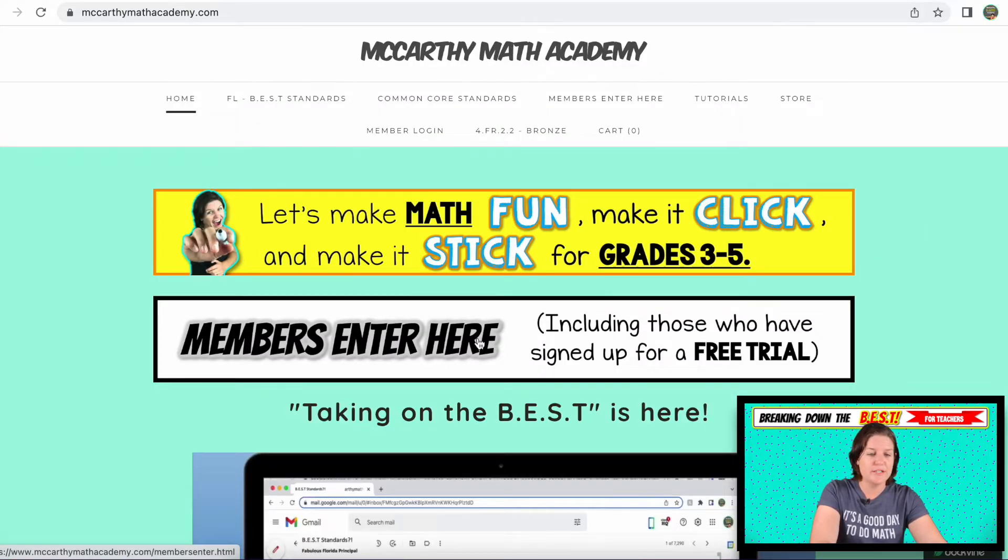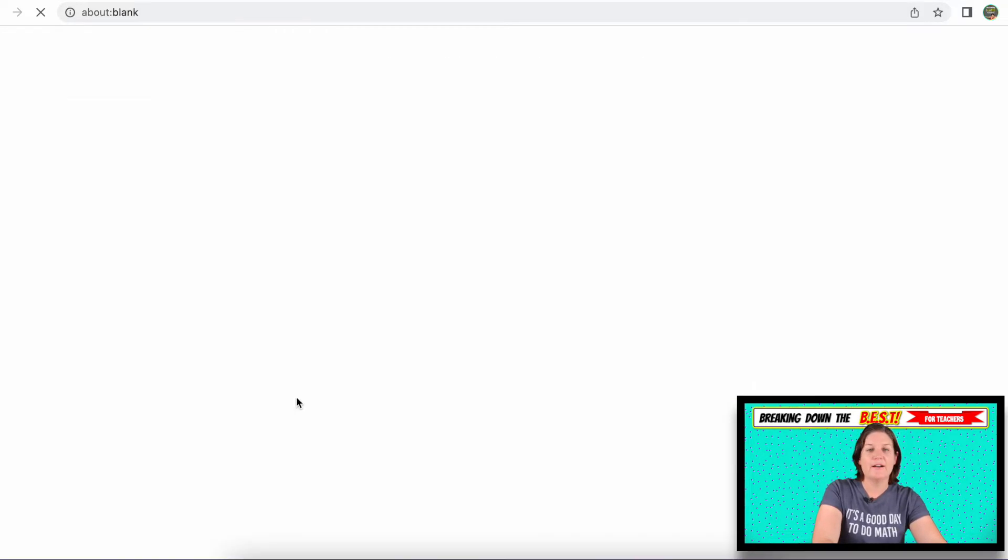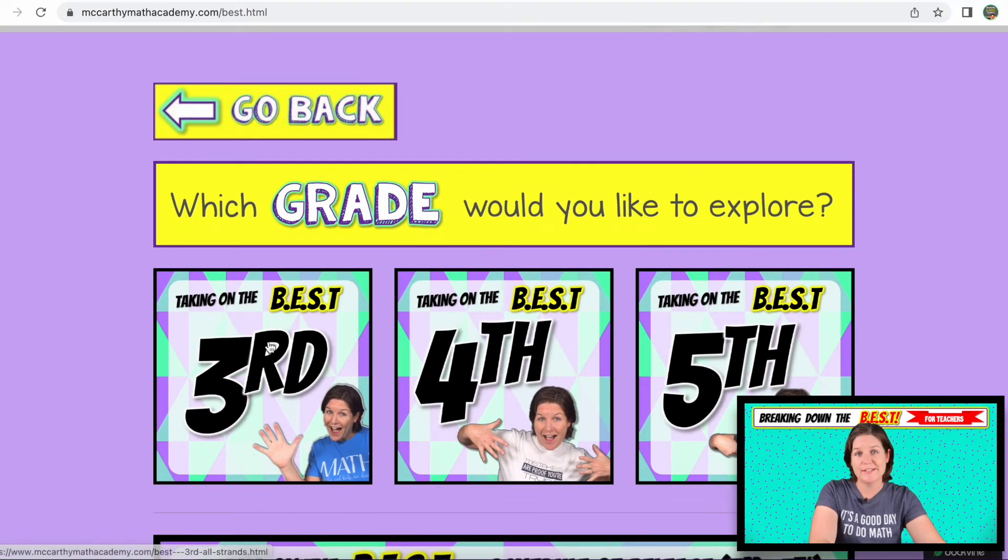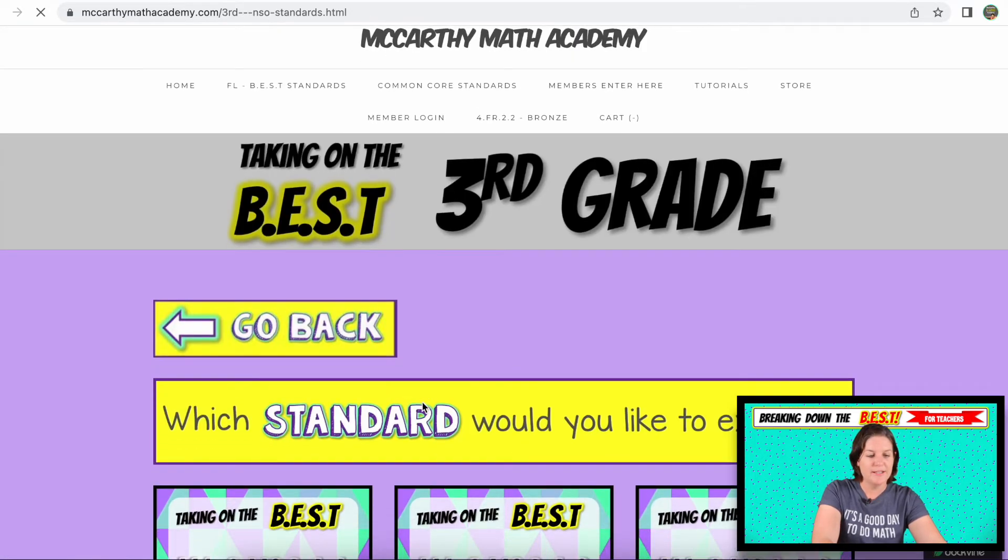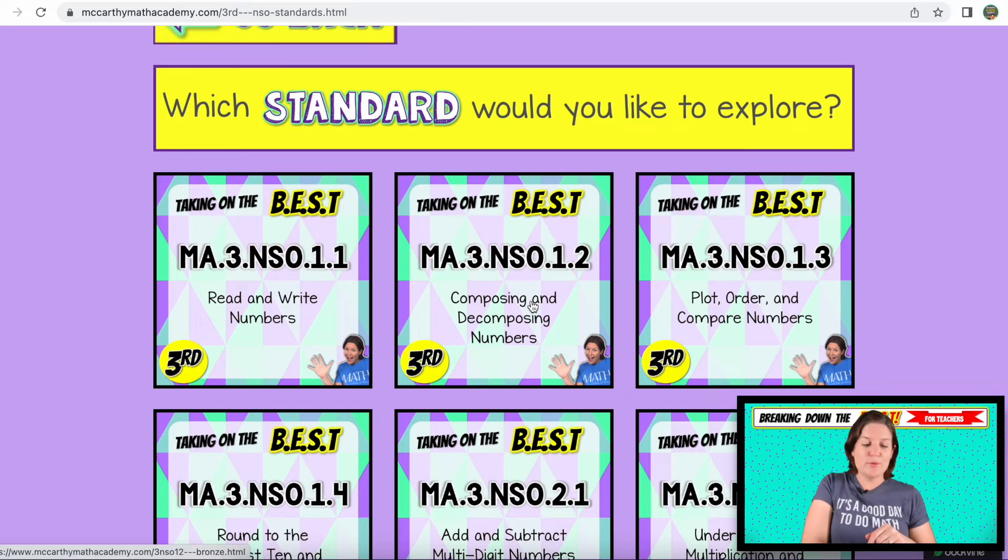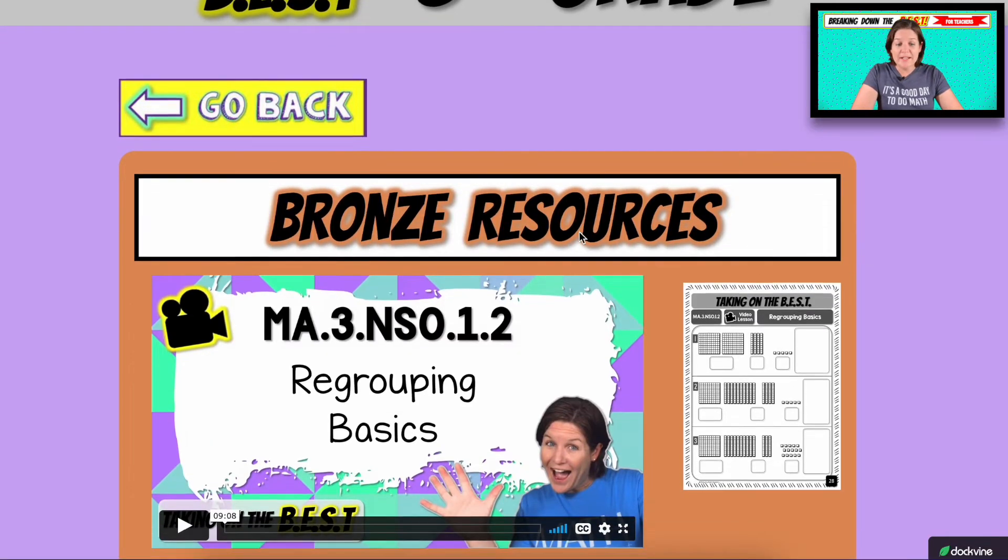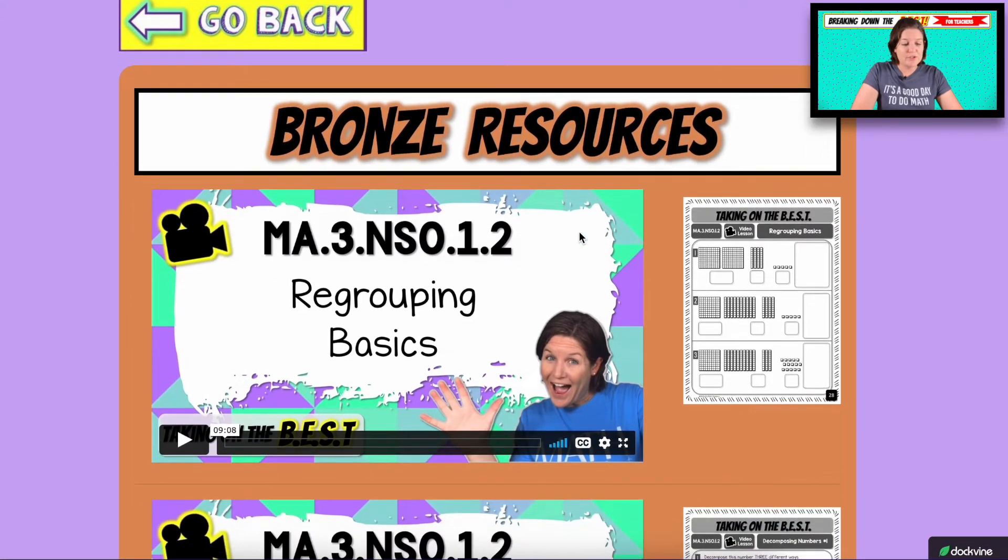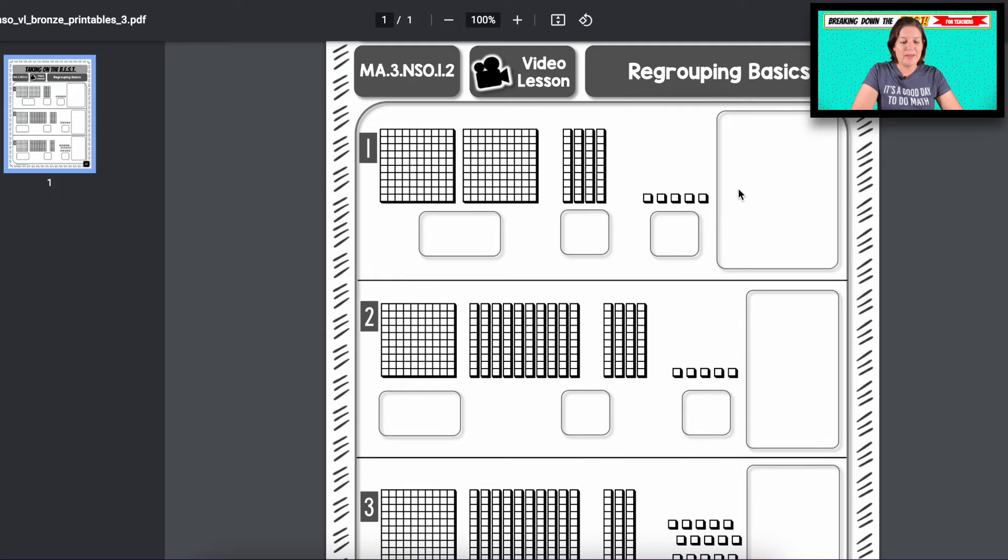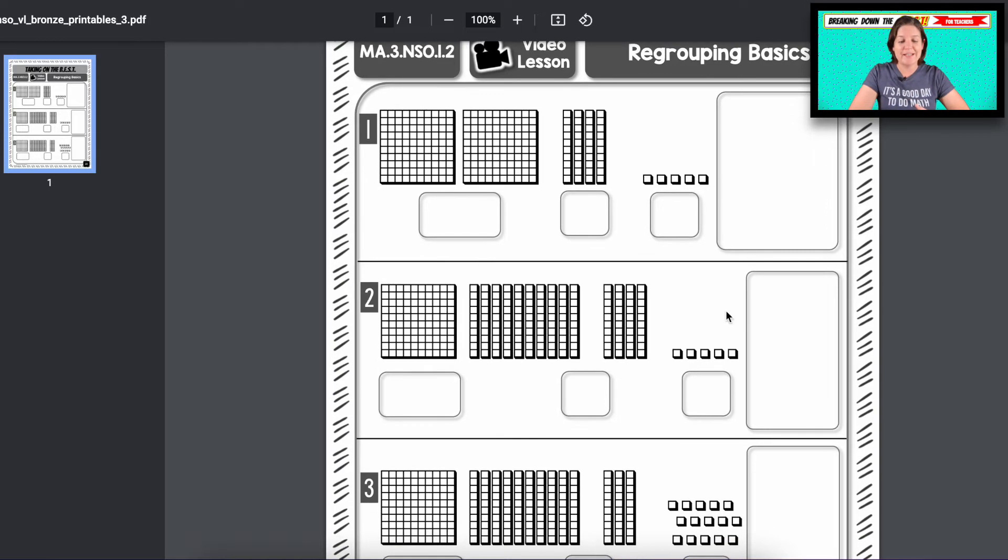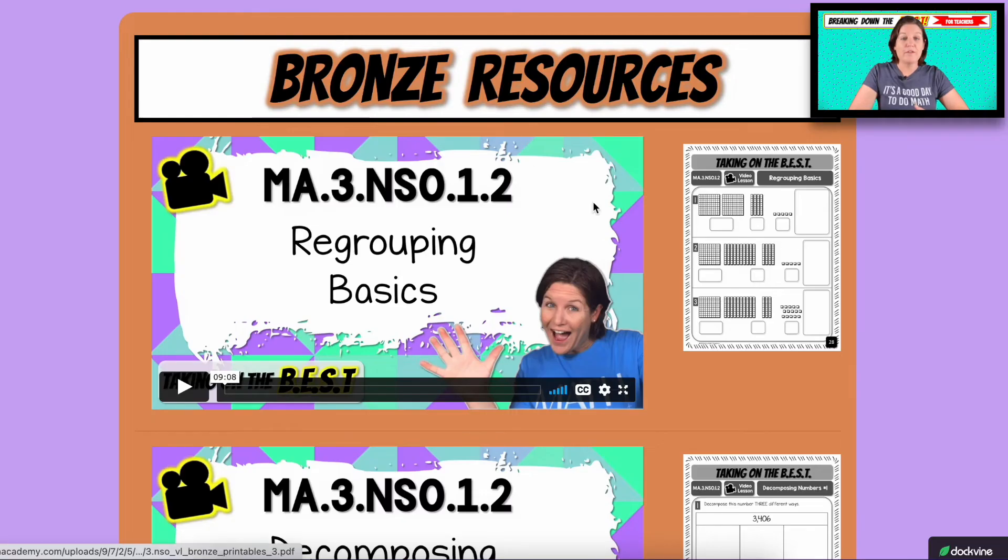Let's take a look at some of the resources that you have. So we're going to enter, you can either enter here or up here at the tab members enter here. Let's take a look at taking on the best. Which grade are we in today's episode? We're in third grade, which strand NSO number sense and operations. And today we're looking at MA.3.NSO.1.2 composing and decomposing numbers. All right. So if you are a bronze level member, here's what you have. You have access to this right here as regrouping basics. It's a video lesson on the basics of regrouping. And here's the printable over here. And basically what's happening is we have the same number. We have 243 and then we're decomposing that number different ways and adding it up over here. You can see that in the video lesson. So this is the printable guide for the video lesson.